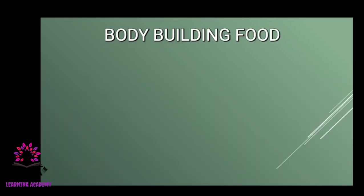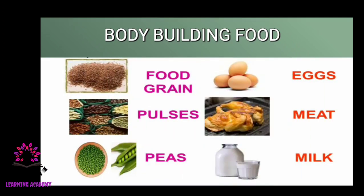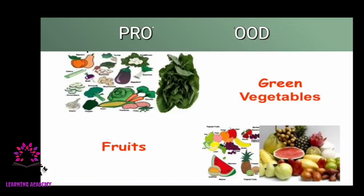The second category is body building food — food items which help us to grow. Examples include food grains, pulses, peas, eggs, meat, and milk. The third category is protective food — food items like green vegetables and fruits that protect our body from various diseases.